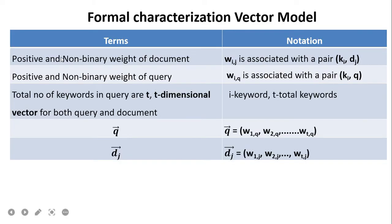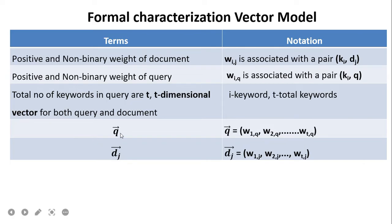Formal characterization of the vector model: positive and non-binary weights of a document are represented by w_ij, where j is the document and i is the particular keyword. Similarly, the positive and non-binary weight of a query is represented by w_iq, where i is a keyword from a set of t keywords. The vector representations are: q-bar = (w_1q, w_2q, ..., w_tq) and d_j = (w_1j, w_2j, ..., w_tj).